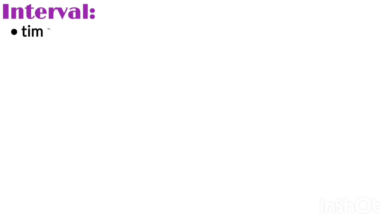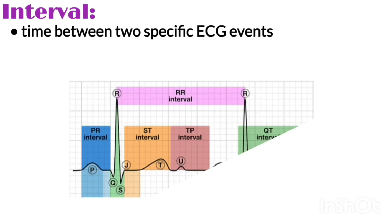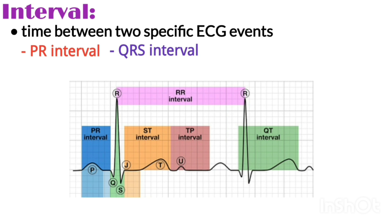The second component is the interval — the time between two specific ECG events. The intervals commonly measured on an ECG include the PR interval, QRS interval (also called QRS duration), QT interval and RR interval.